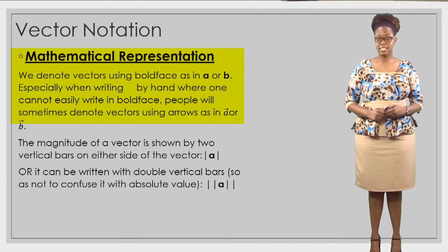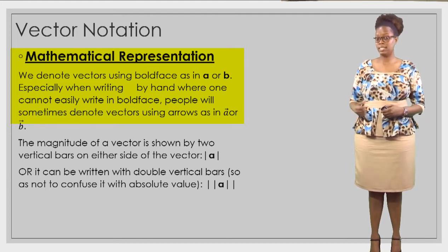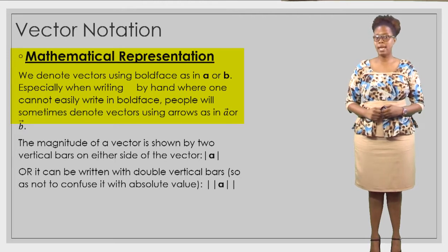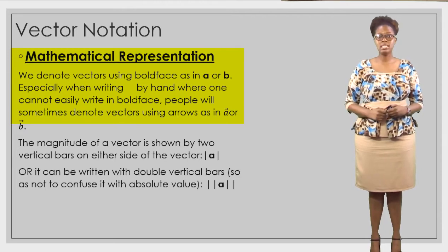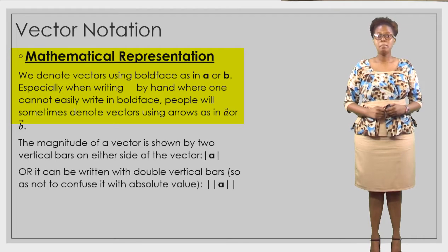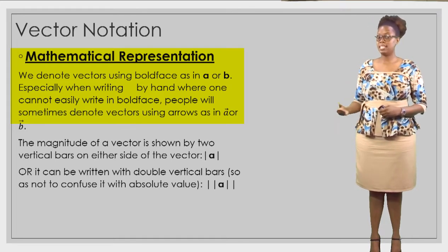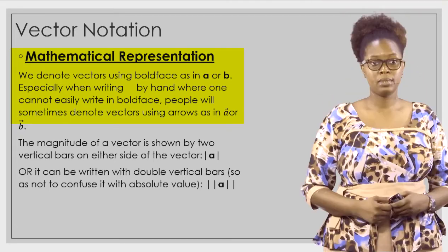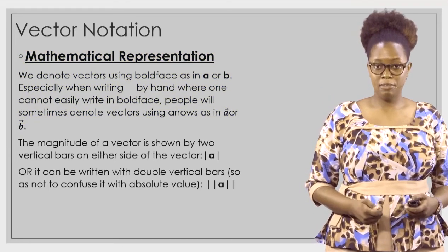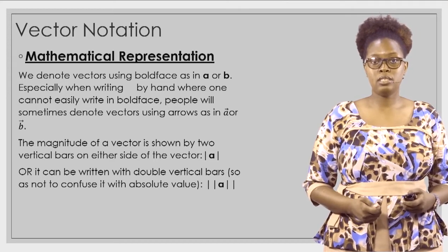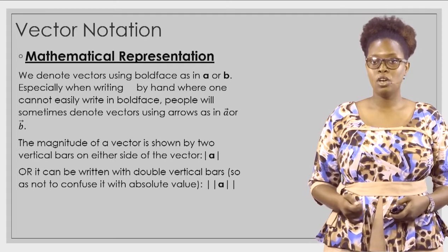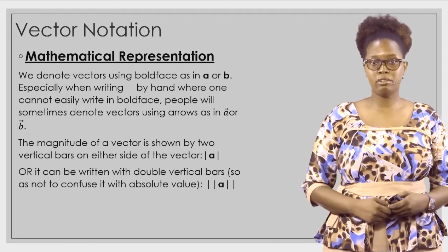For vector notation, we could represent vectors mathematically or graphically. For the mathematical representation, we denote vectors using bold face, as in a or b. Especially when writing by hand, where one cannot easily write bold face, people will sometimes denote vectors using arrows — a with a small arrow over it, or b with a small arrow.